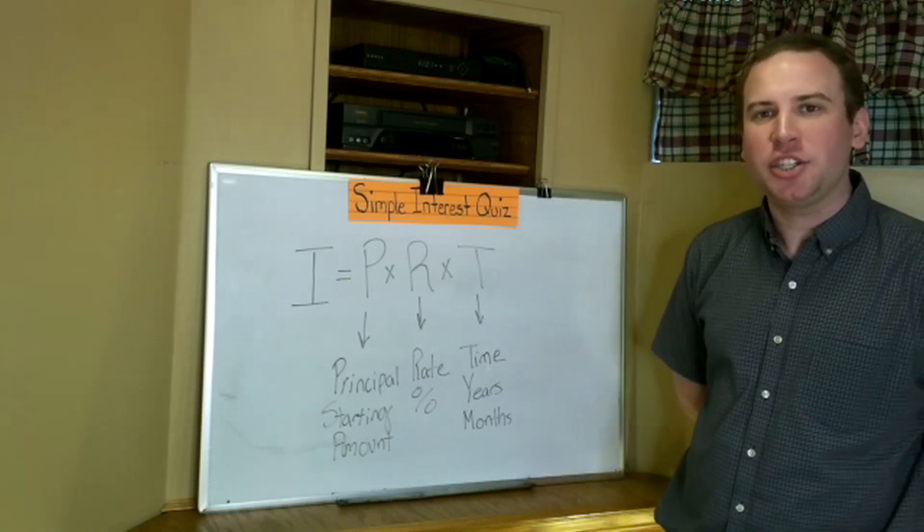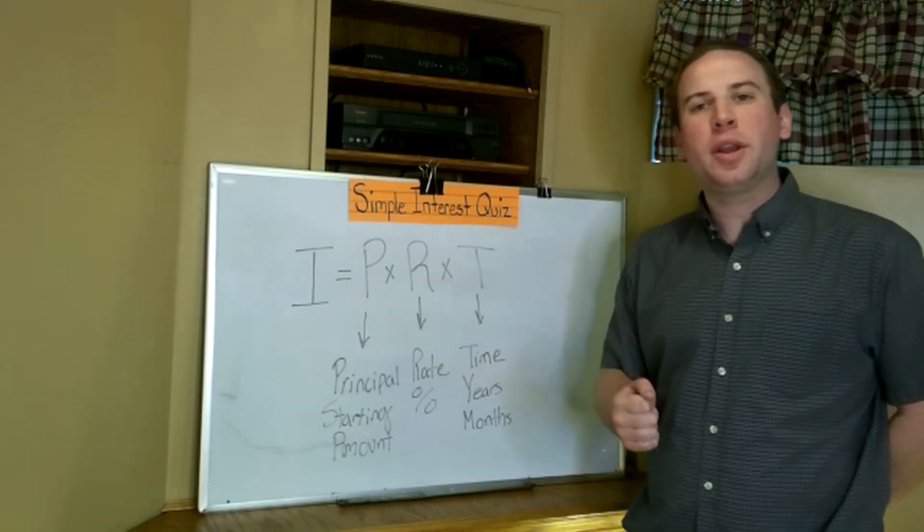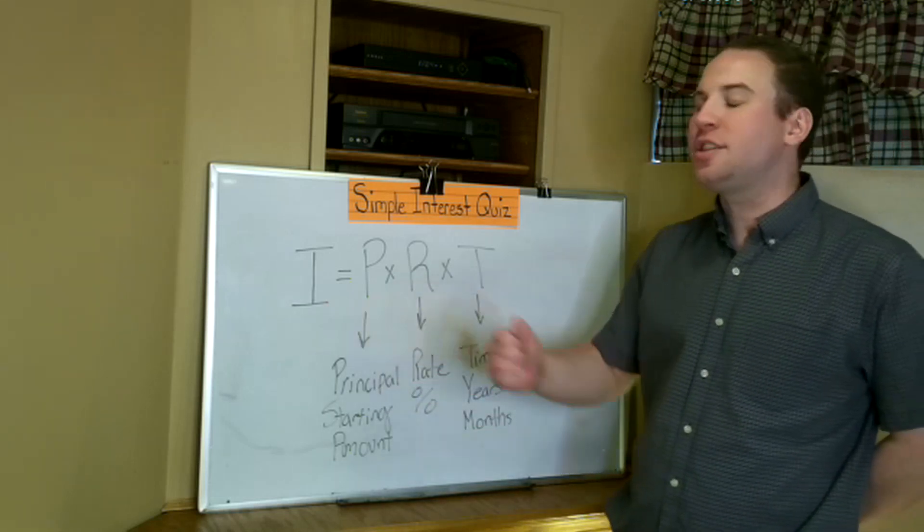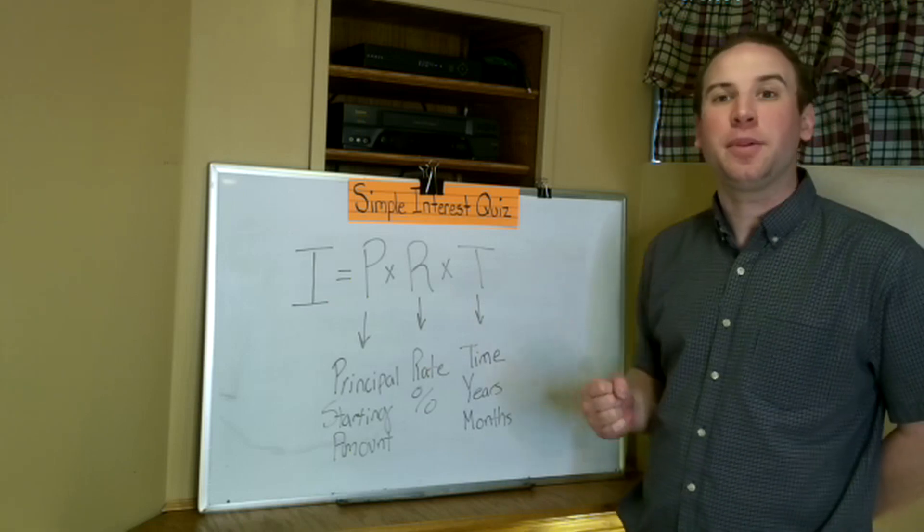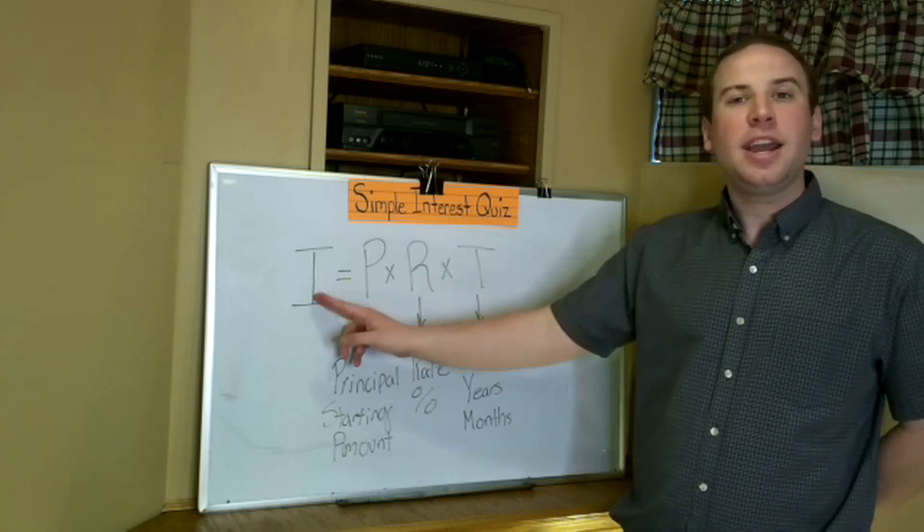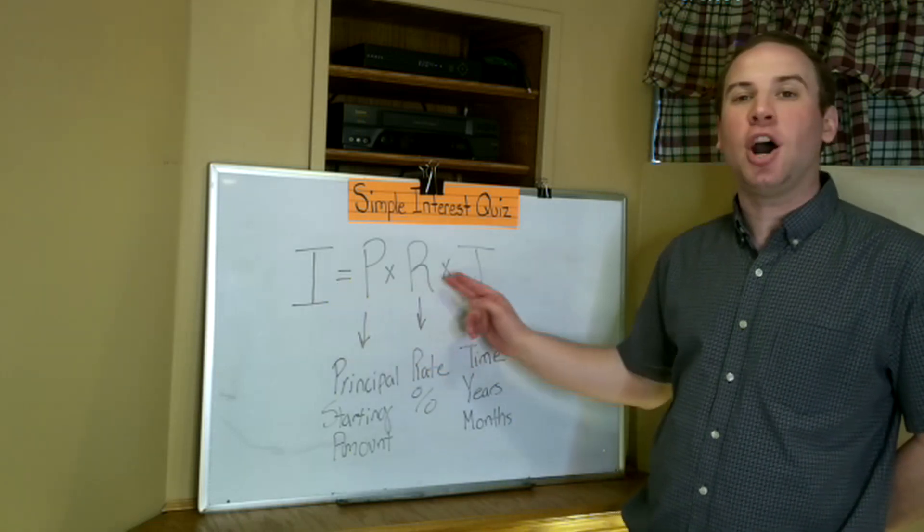This is going to be six questions dealing with our formula we've been talking about last week of simple interest. If you'd like to please review last week's videos involving simple interest. Interest equals P times R times T.